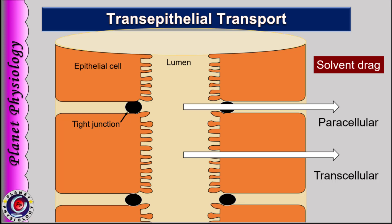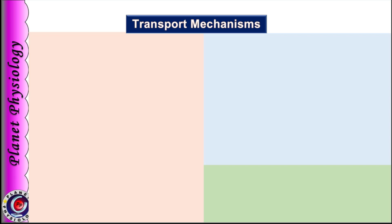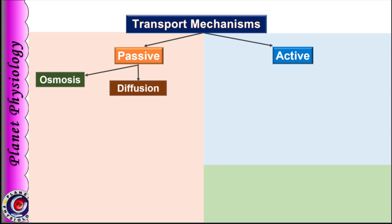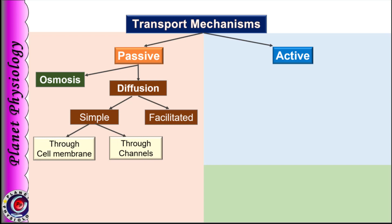So these were the various processes that transport substances between intracellular and extracellular fluid or across epithelial borders. Let us quickly summarize the various transport mechanisms. Transport across the cell membrane can be passive, without use of metabolic energy, or active, by using metabolic energy. Passive transport includes diffusion of solutes and osmosis of water. Diffusion can be simple diffusion or facilitated diffusion. Simple diffusion can take place directly through the cell membrane for lipid-soluble substances, or through channels for water-soluble substances.